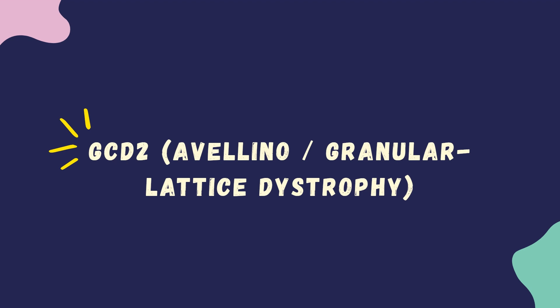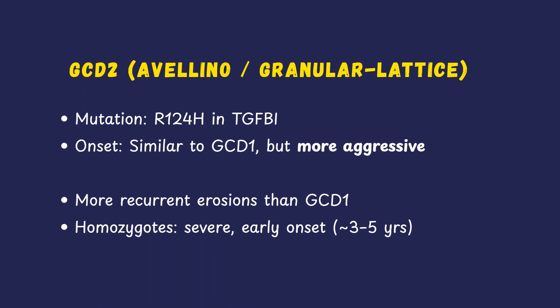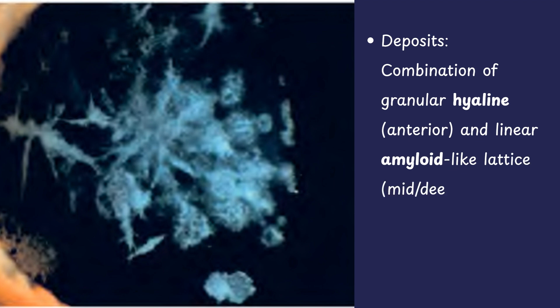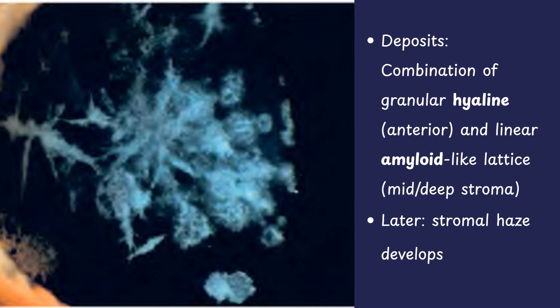GCD Type 2, also called Avellino dystrophy or granular lattice dystrophy, is caused by the R124H mutation in the TGF-β1 gene. The onset is similar to GCD1 but the disease is more progressive. Recurrent erosions are more common than in GCD1. In homozygous cases, onset can be very early, even at 3 to 5 years of age. On slit lamp, GCD2 shows a combination of granular and lattice deposits: granular (hyaline) deposits appear breadcrumb-like in the anterior stroma, while lattice (amyloid) deposits appear as refractile lines in the mid to deep stroma.